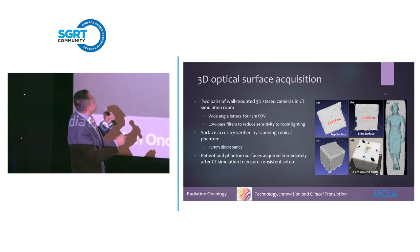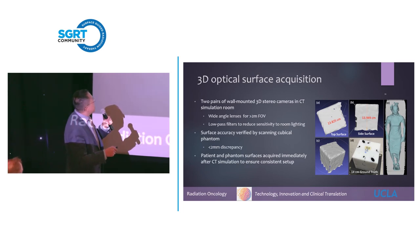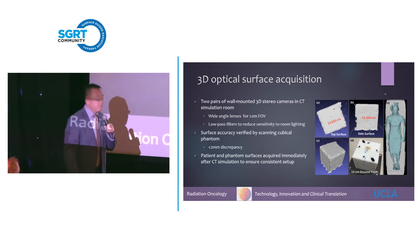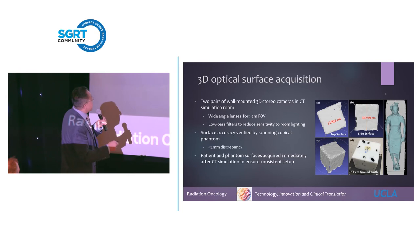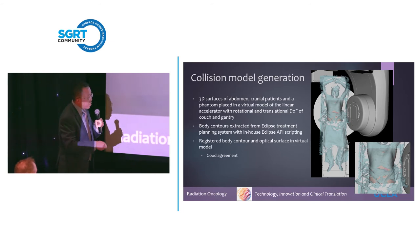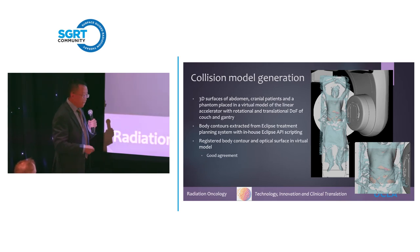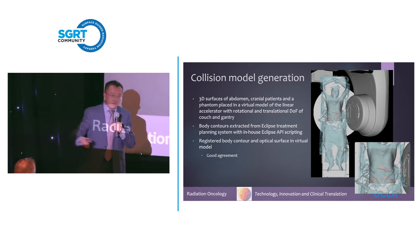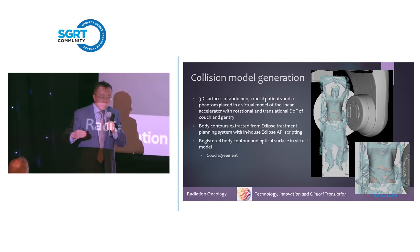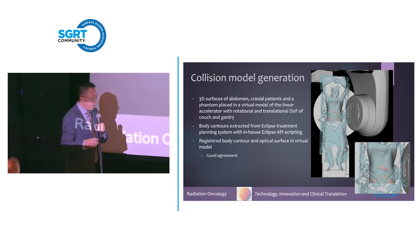We installed two pairs of wall-mounted 3D cameras in the CT simulation room. Both cameras are equipped with wide-angle lenses for over 2 meters of field of view and low-pass filters to reduce sensitivity to room lighting. We verify the surface accuracy by placing a phantom of known geometry across the field of view, confirming that surface image error is under 2 millimeters. For the patient, we acquire the surface image immediately before or after the CT scan, so there is very minimal motion between the optical and CT imaging.